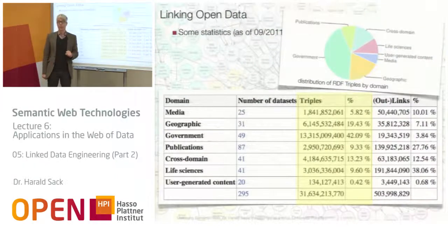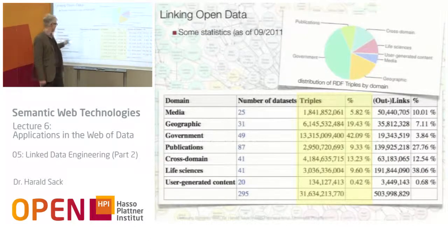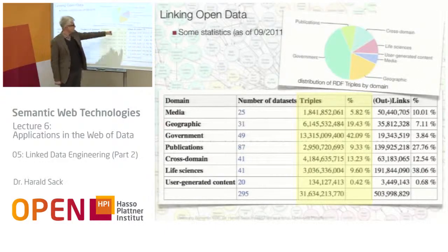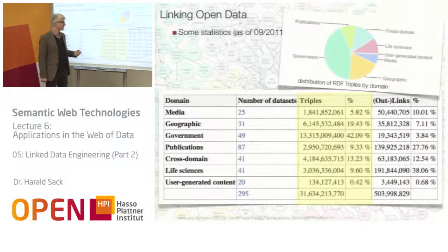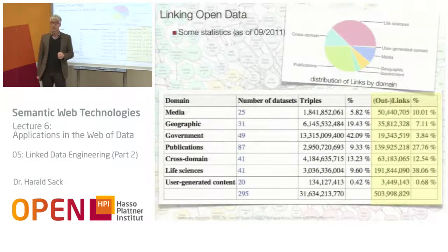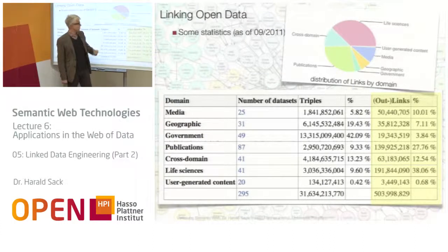Let's look at a few numbers. For the specific groups or domains, you can see the number of triples and the number of datasets. For example, we have 25 media datasets with almost 2 billion triples. The most triples are in the government dataset — 42% of all triples in the Linked Data Cloud. On the other hand, life sciences is relatively smaller at 41 datasets with 3 billion triples, roughly 10%. But the interlinking is completely different: government data, which had more than 40% of all triples, contains only 4% of all the links — so it is badly connected.